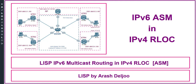LISP IPv6 multicast support was added on the IOS XE platform starting in the 16.2 release. Prior to this release, the IOS XE platform supported only IPv4 multicast in LISP.